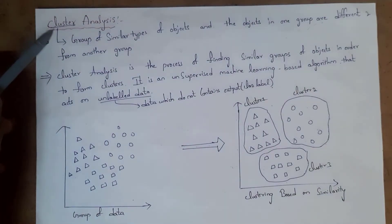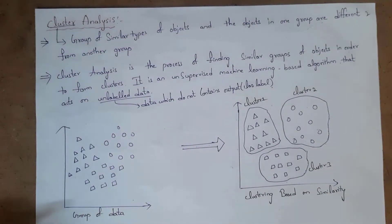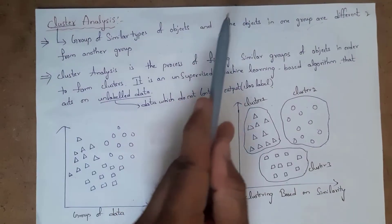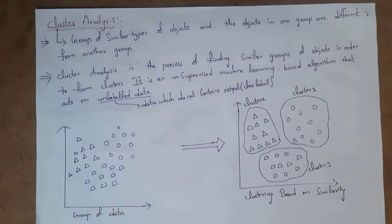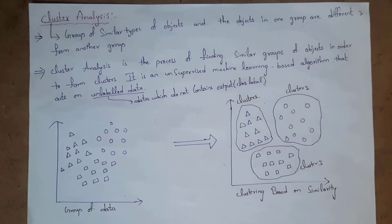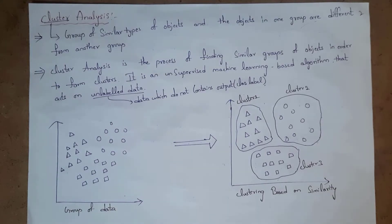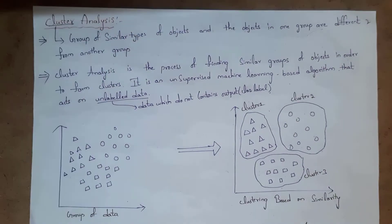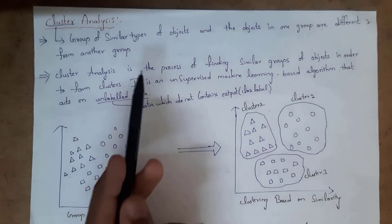A cluster is nothing but a group of similar type of objects, and the objects in one group are different from another group. For example, in a class, boys will sit on one side and girls will sit on another side. So the boys group forms one cluster and the girls group forms another cluster, such that the boys cluster is different from the girls cluster — meaning there are no similarities between these two clusters.